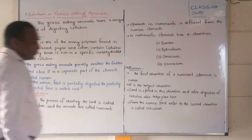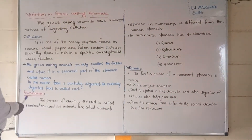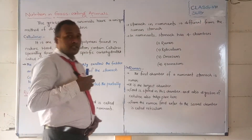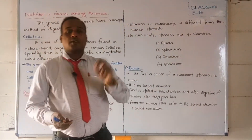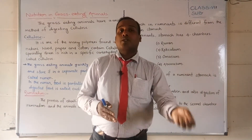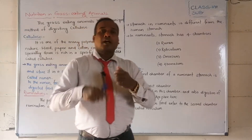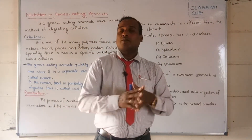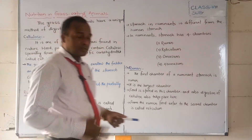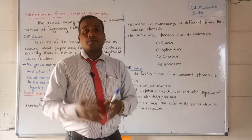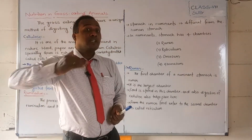Let me explain now. Look here — Nutrition in Grass-Eating Animals. Just like in humans where food goes through the mouth, oesophagus, stomach, small intestine, large intestine, and rectum to the anus, something similar happens in grass-eating animals. But grass-eating animals — like cows, buffaloes, and deer, which are herbivores — are different from humans.